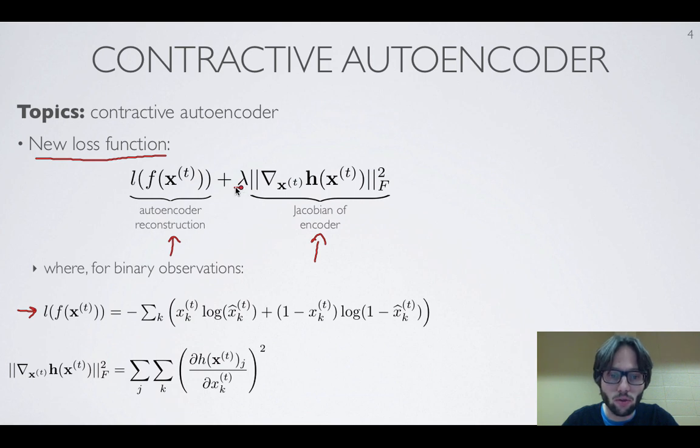And which multiplies the Jacobian of the encoder, for which we take the square of its Frobenius norm.